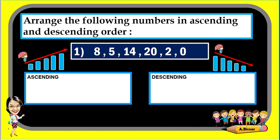From the given direction, arrange the following numbers in ascending and descending order. For number one, the given numbers are eight, five, fourteen, twenty-two, and zero. These are whole numbers, so it is very easy to identify which is greater than the other. To arrange in ascending order, we start from the lowest: zero, then two, then five, then eight, then fourteen.